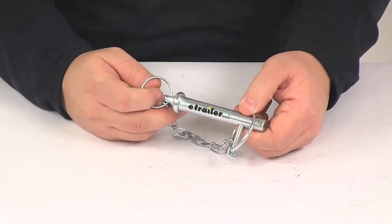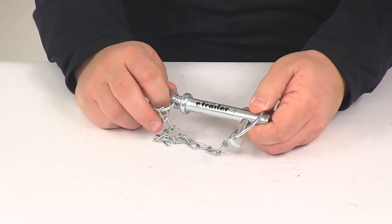That's going to do it for today's look at the replacement footplate keeper pin for E-Trailer and Ram Square Direct Weld Jacks.